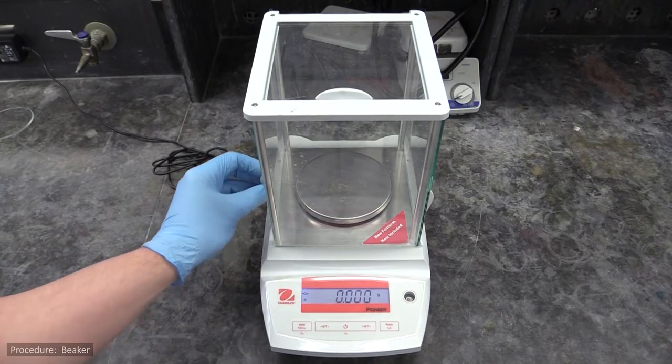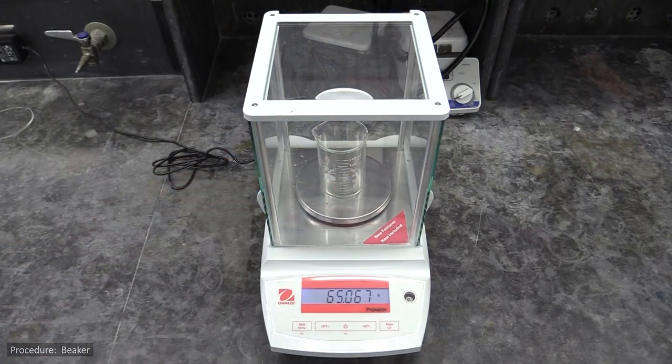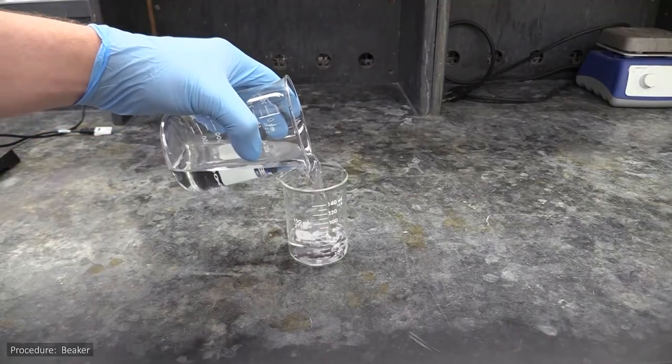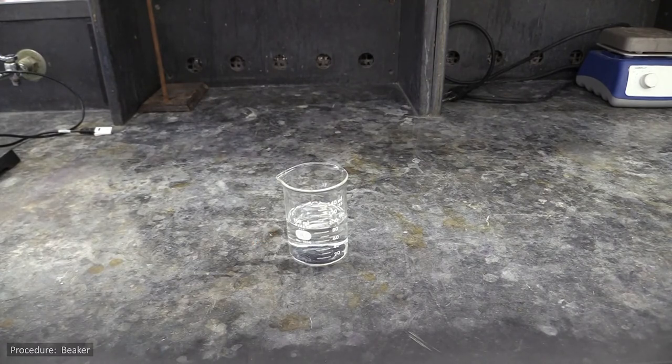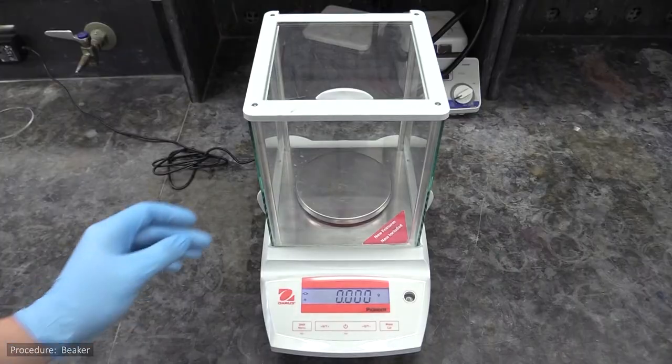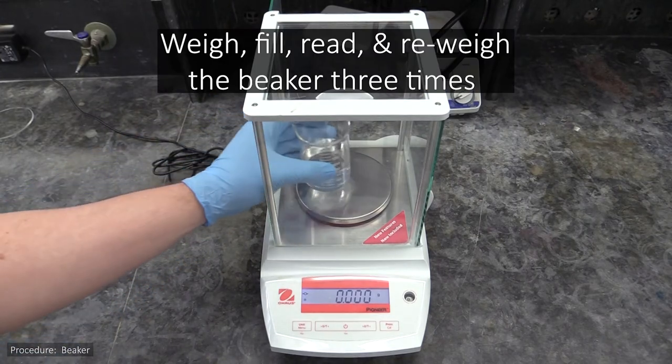Coming back to the beaker, you will begin your data collection by weighing it when dry to get its empty mass. You will then fill it about halfway with DI water and read the glassware's markings to determine how much water the markings say it contains. You will then re-weigh it with the water inside. To get all the data you need, you'll do these things three times.